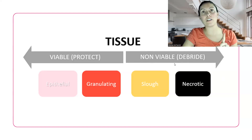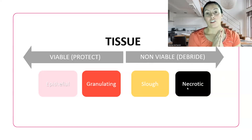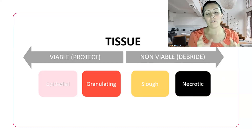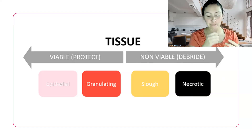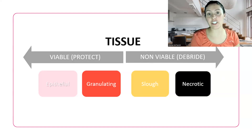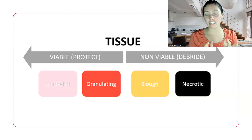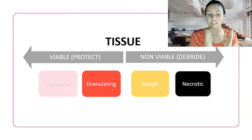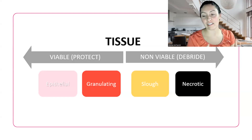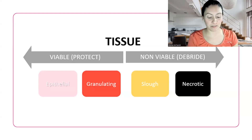Unless there are some reasons where we don't debride necrotic tissue. For example, a diabetic foot — if they don't have good circulation, we are going to leave that necrotic tissue there. We've got to be super careful with diabetics. If we have necrotic tissue that is stable, dry, and intact, we're leaving it. This is educational — it's not for you to be debriding your own wounds. It's more educational for nurses and healthcare professionals about what they should be doing. Always, always, always talk to your doctor or wound care professional first.